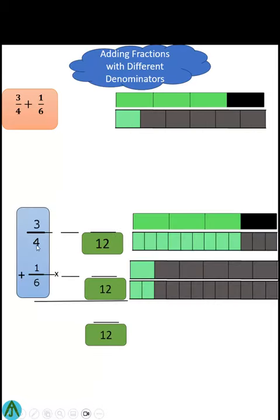We're going to change how we write the number, but it still means the same thing. Twelfths are a lot smaller than fourths or sixths, so I will need more pieces for it to be the same amount. The same amount is shaded.